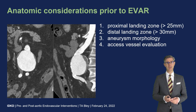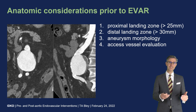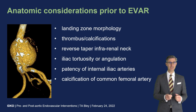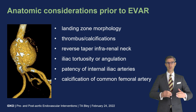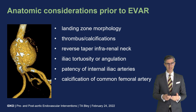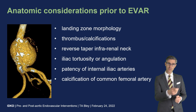Prior to EVAR, we want to assess some anatomic considerations: how are the proximal and distal landing zones configured, what is the aneurysm morphology, and what about the access vessels leading to the aneurysm? We want to look exactly at the landing zone morphology — are there calcifications, is there thrombus, how is the neck organized, is it tapered or reverse tapered, and what about tortuosity of the iliac arteries that could make it difficult to maneuver the stent graft toward the aorta?